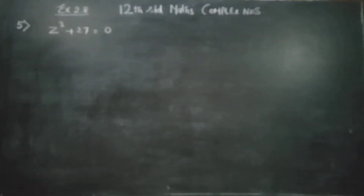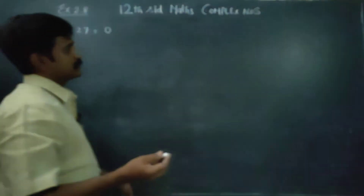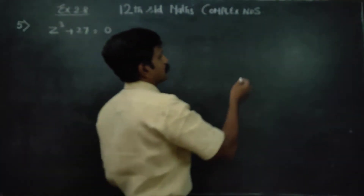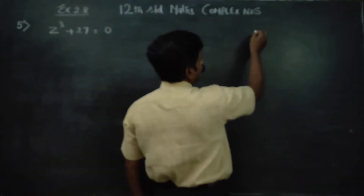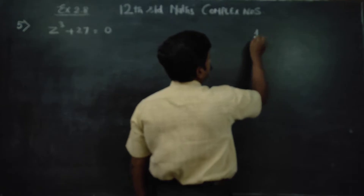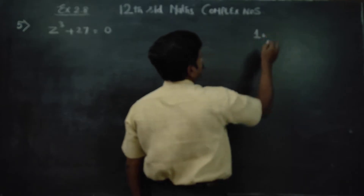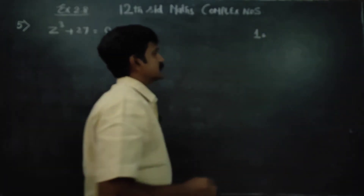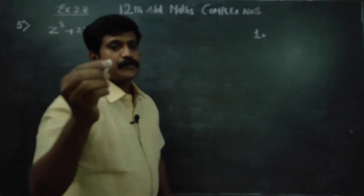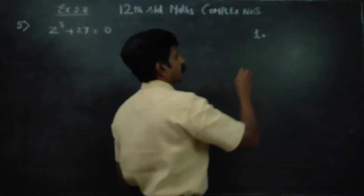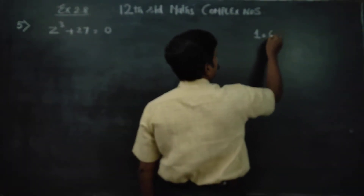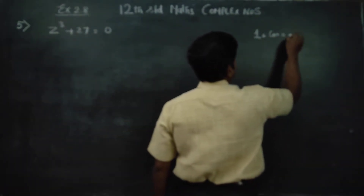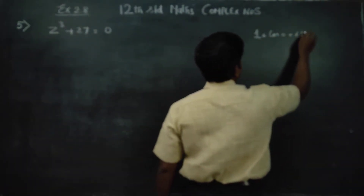Hello 12th standard students, before entering into this problem, a small piece of information about polar forms. There are ready-made answers: for 1, the polar form is cos0 plus i sin0.